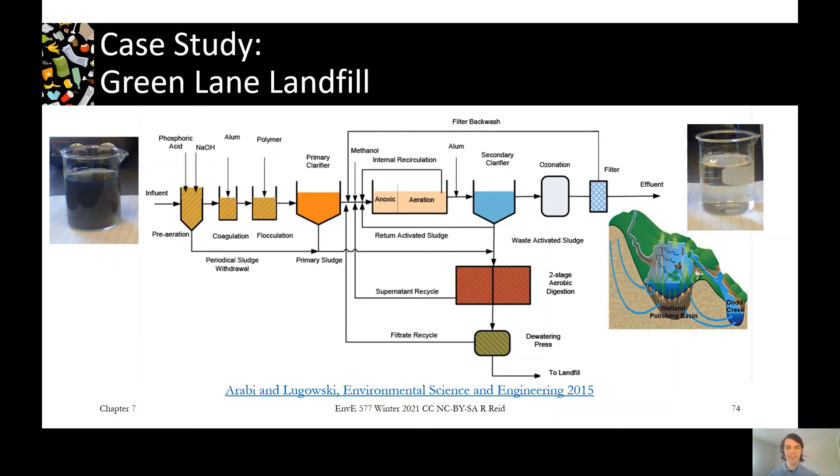Coming out of that activated sludge process, we're doing another coagulation, adding some more alum and another secondary clarifier. Sludge is coming down out of the clarifier and that's going to be aerobically digested, dewatered and put back in the landfill. And then our secondary effluent is going to be ozonated for a disinfection step, filtered and then discharged to a treatment wetland, which acts as a polishing step to treat any additional contaminants before it goes into the final receiving environment.